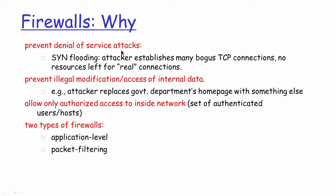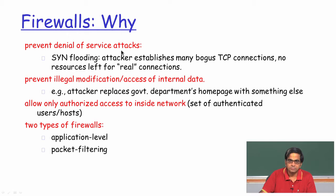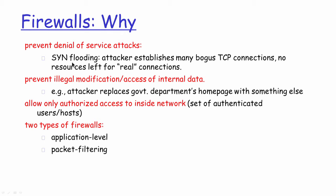A denial of service attack is where an external hacker wants to bring down a part of the network or a very critical server. The attacker will try to see how the system resources on that particular server can be completely consumed, thereby making those resources unavailable for legitimate connections. For example, if memory is a critical resource, the attacker will try to completely use up the memory in a bogus manner, such that when a legitimate connection arrives, the server may not have enough memory to allocate for it.